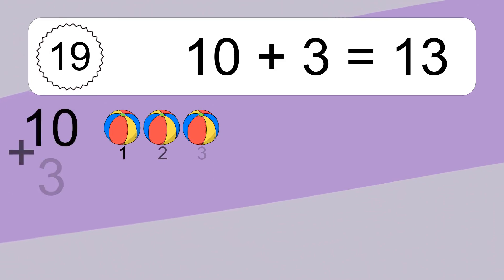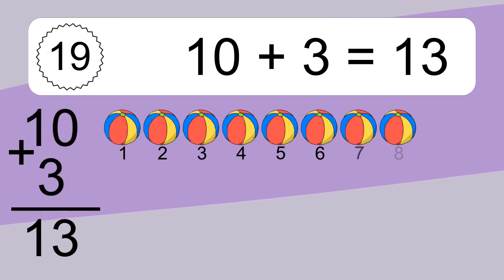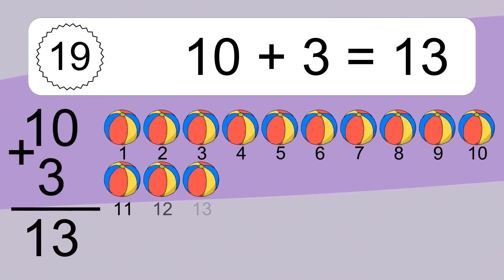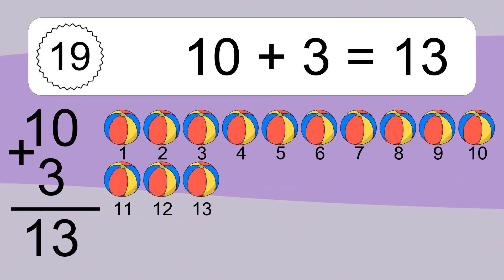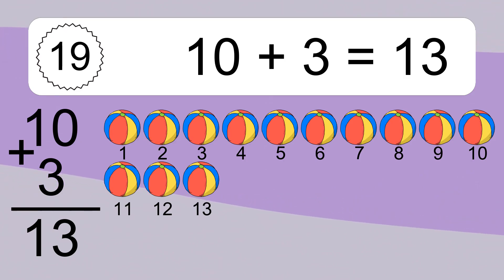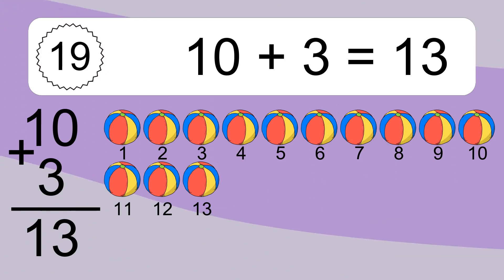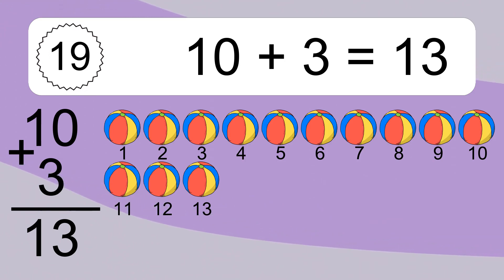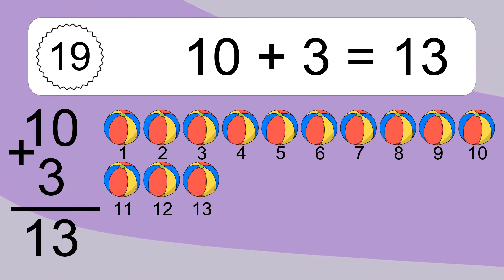10 plus 3 equals what? 10 plus 3 equals 13. Let's count it: 1, 2, 3, 4, 5, 6, 7, 8, 9, 10, 11, 12, 13.